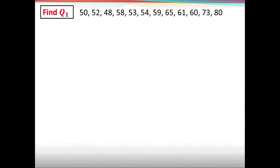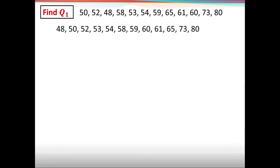To find Q sub 1, first arrange the numbers in ascending order: 48, 50, 52, 53, 54, 58, 59, 60, 61, 65, 73, 80. Counting all values, n = 12.